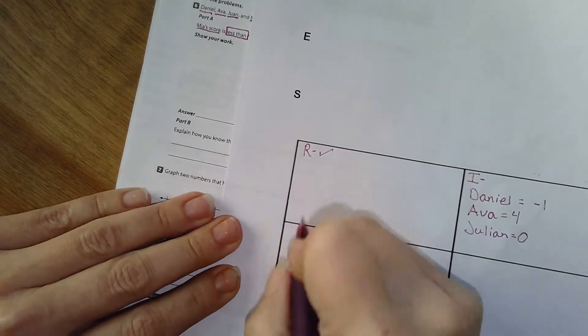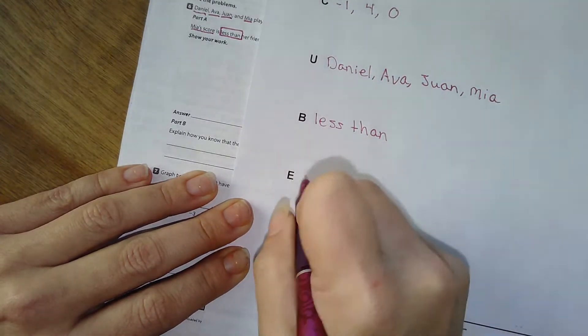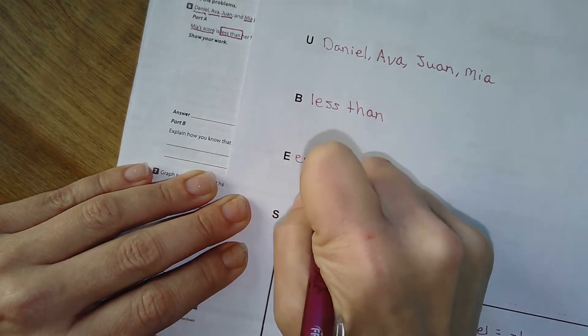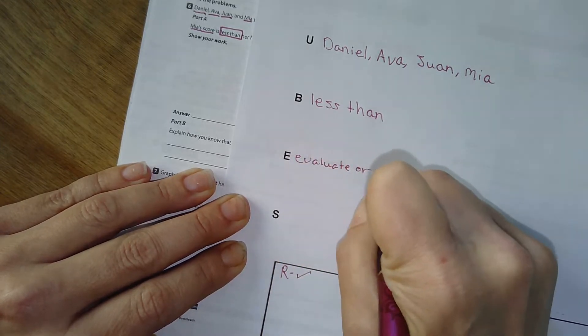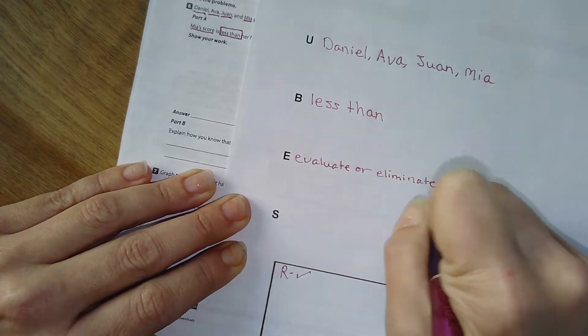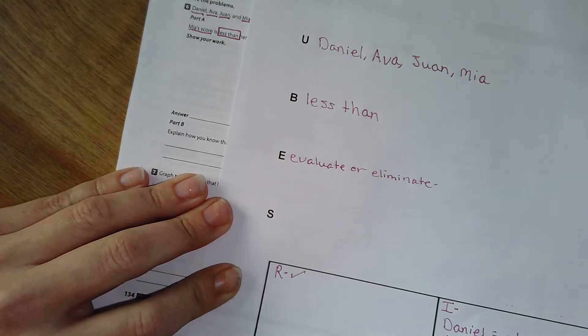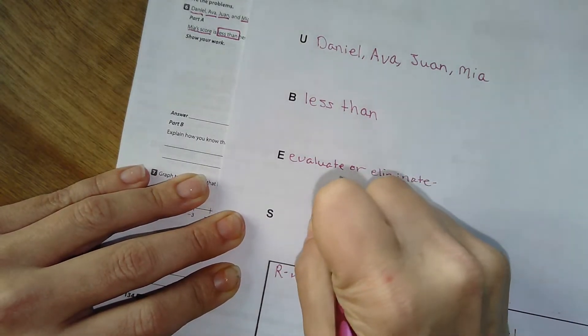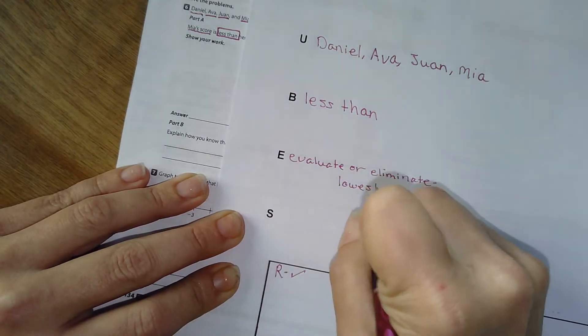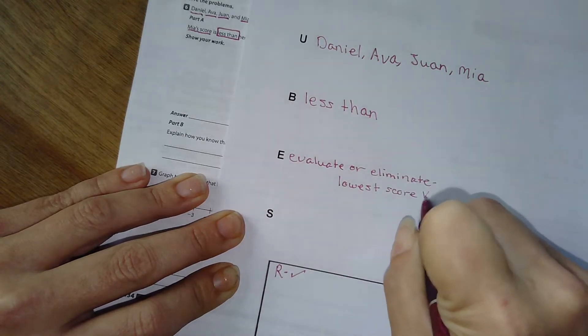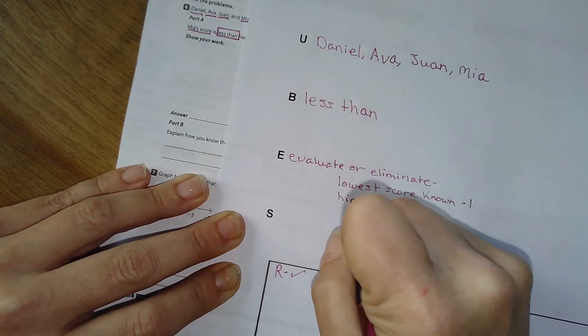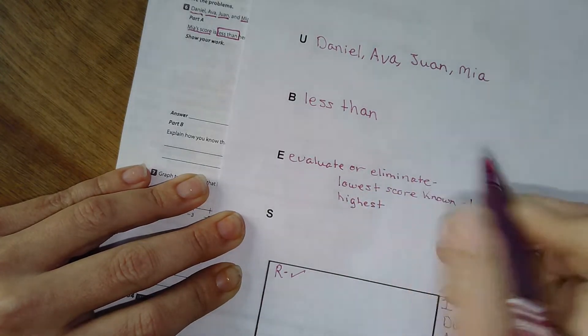Well, so now I'm going to think of a plan. I can also think of what do I know. I'm going to evaluate here. Evaluate or eliminate. I know we've been saying just eliminate, but I saw one that said evaluate and I like that too. So I'm going to evaluate. Well, you know what? If I think about what I already know, the lowest score so far that we know, right? Score known is a negative one, right? And the highest is Ava at four, right?